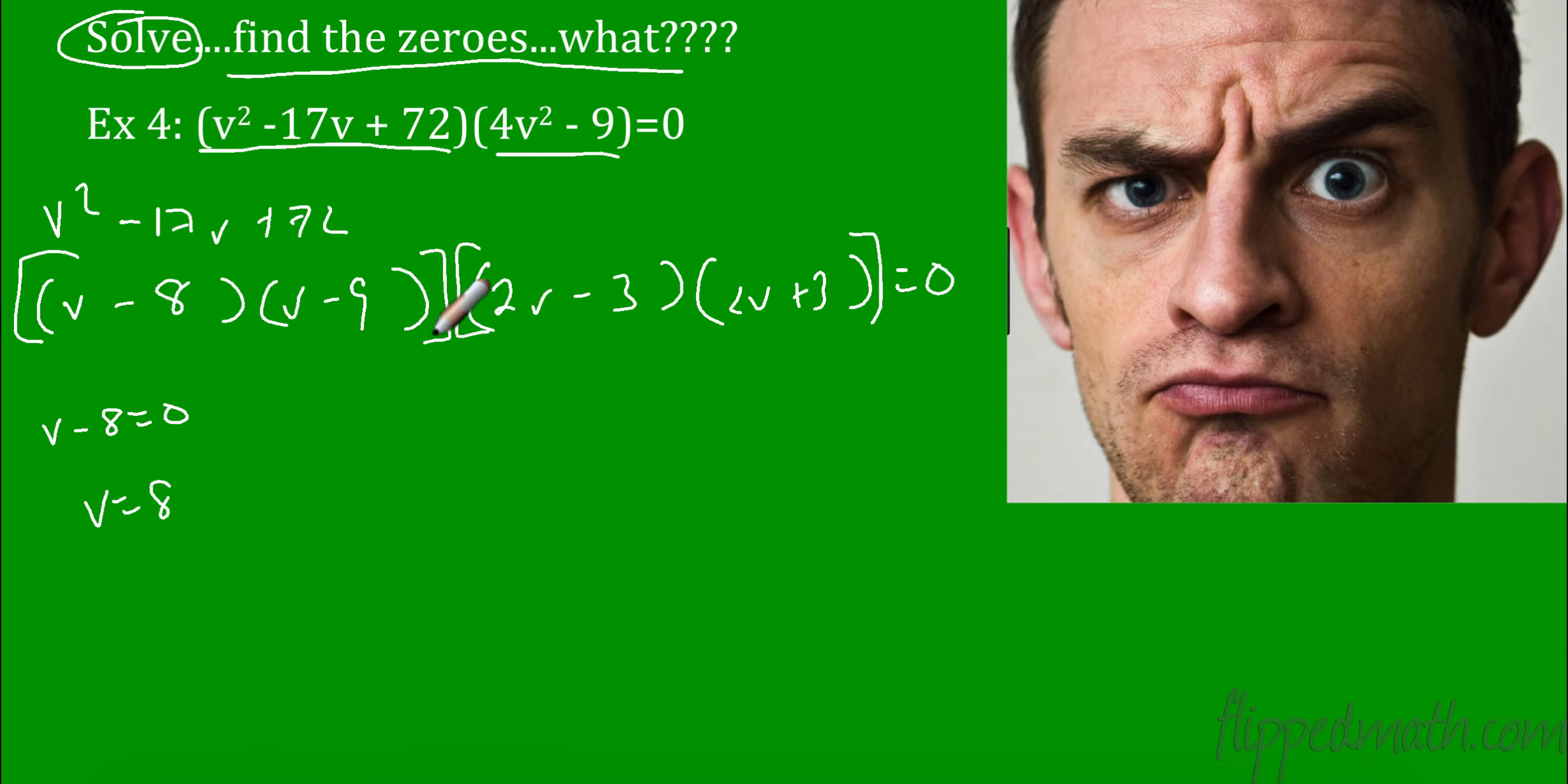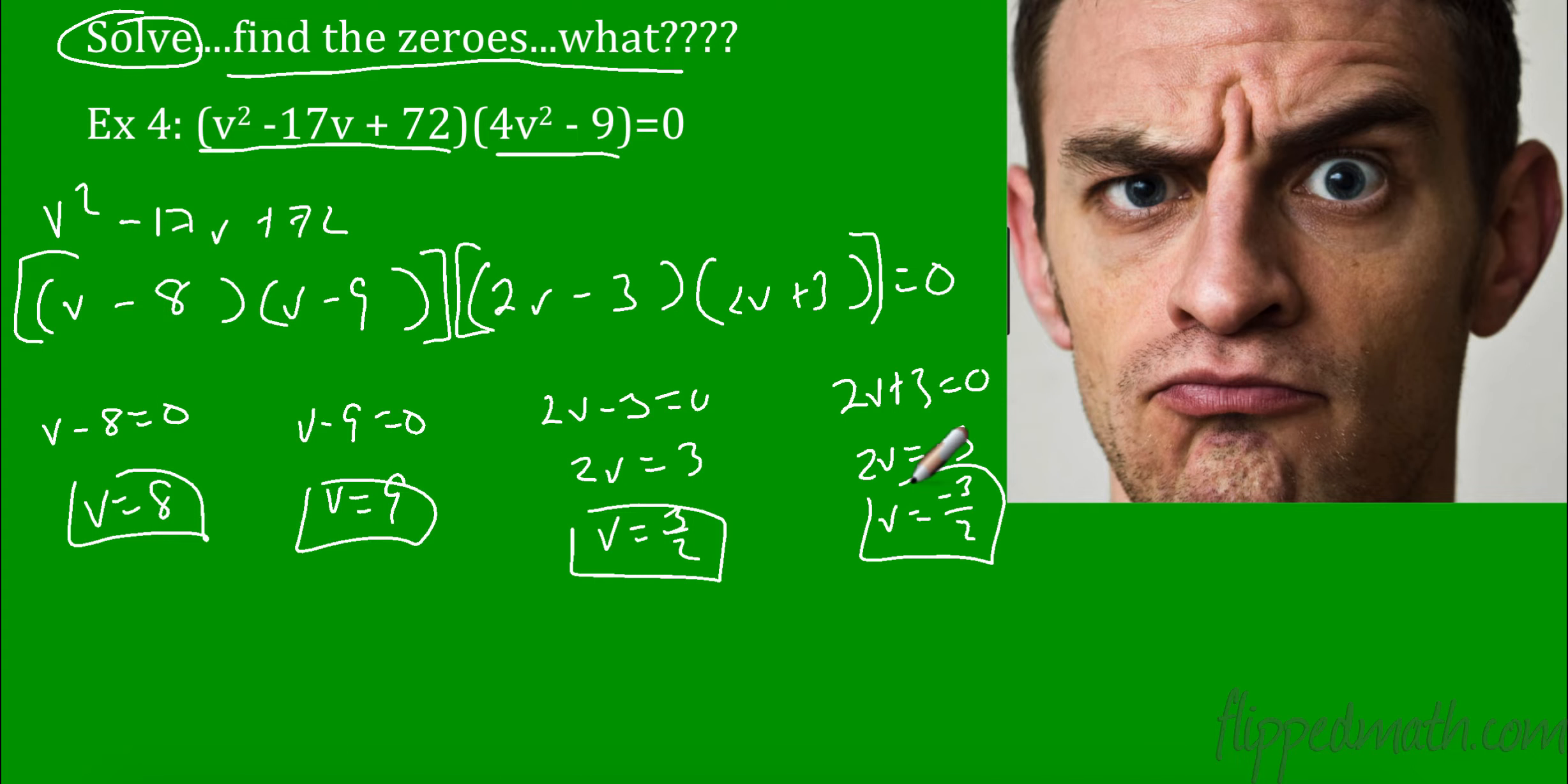So now I have four factors. I've got to set them all equal to 0. So this would be v equals 8. Now, obviously, some of you are looking at this right now, and you say v is 8. You know that, and you do in your head. That's fine. Just be careful. I see a lot of kids do that, and then they make mistakes when it gets to ones like this, and they just say v is 3, and that's not true. So this would be 2v equals 3. v would equal 3 halves. This one would be negative 3 halves. So we have four possible answers. Do you need all four? Yeah, you need all four.